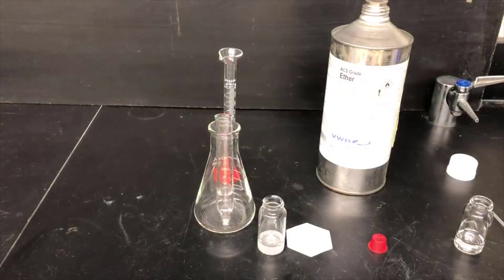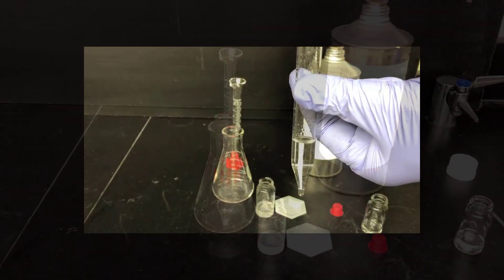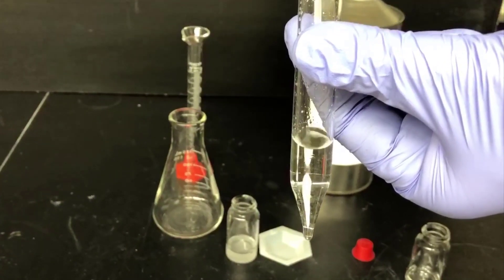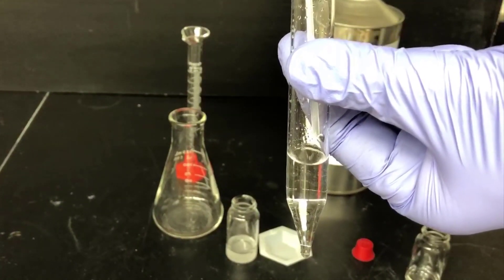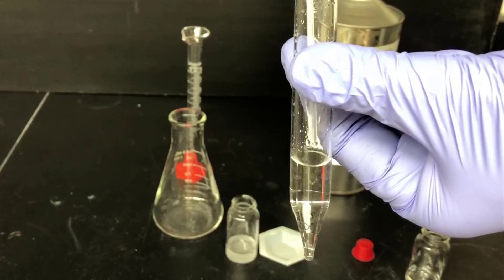Now that we have the top and bottom layer separated, we need to determine which one is the organic layer and which is the water layer. I'll test that using a water droplet test. I'm adding droplets of water to the upper layer to see what happens, to see where they go.